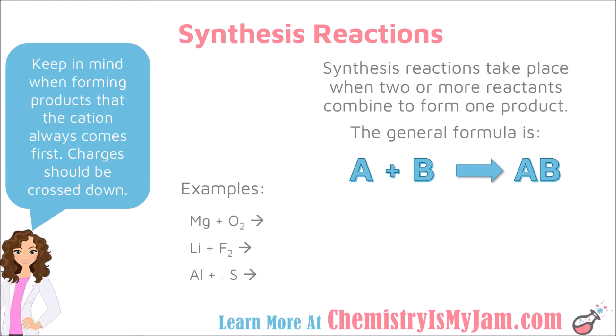In the examples below, we're going to predict the products for some synthesis reactions. Notice that in each case, I start with multiple reactants. So in the first example, I'm starting with magnesium and oxygen. They're going to come together to form just one compound. So the first thing I'm going to do is list the atoms that are present, which in this case are magnesium and oxygen.